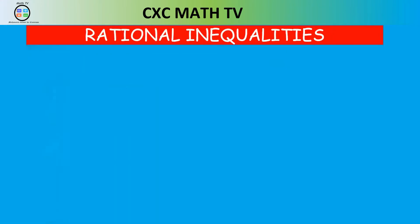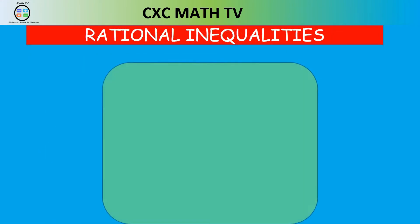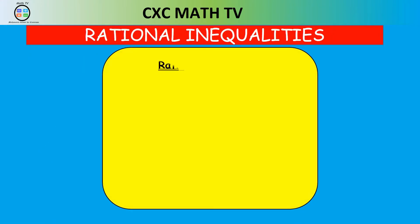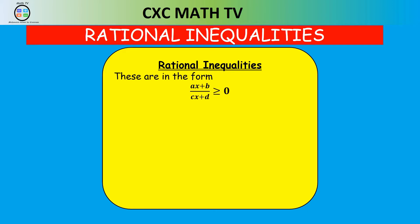Hello there, welcome to CXC Math TV. Today we're going to be solving rational inequalities. Rational inequalities are inequalities of the form AX plus B divided by CX plus D, greater than or equal to zero, or less than or equal to zero.